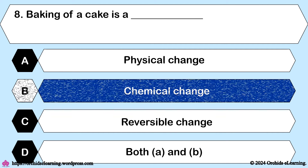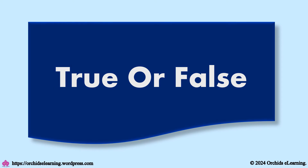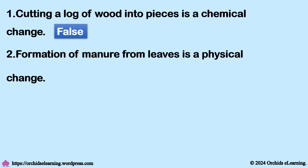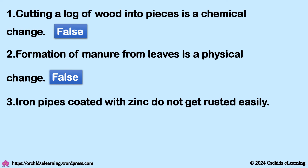Answer: A — Chemical change. True or False: Cutting a log of wood into pieces is a chemical change — False. Formation of manure from leaves is a physical change — False. Iron pipes coated with zinc do not get rusted easily — True.